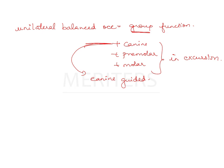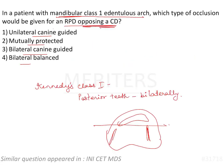When restoring bilaterally edentulous posterior areas, you are re-establishing the occlusion. In the given question — complete denture opposing a mandibular RPD — you want bilateral balanced occlusion so posterior teeth remain stable at all times. Unilateral canine guided means only one side has canine contact, causing the denture to tip on the canine — not good. Bilateral canine guided causes tipping along the canine axis — also not good. Mutually protected is not recommended as posterior teeth will be in disocclusion during anterior contact. Therefore, the correct answer is bilateral balanced occlusion.